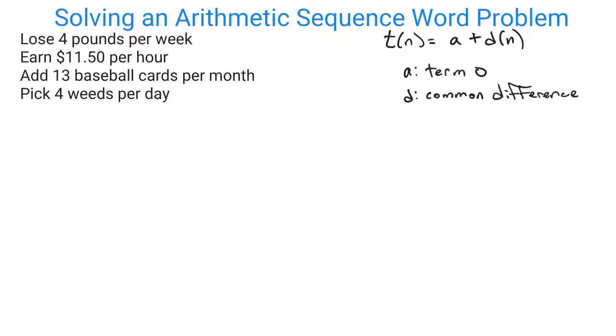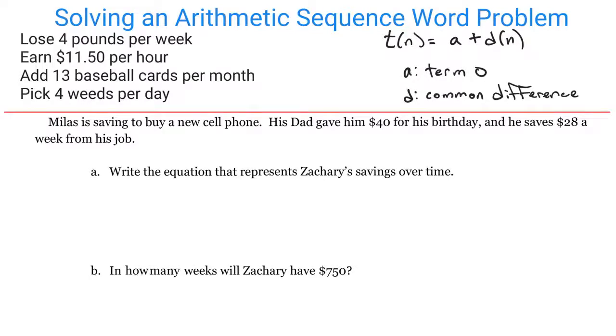Let's look at an example. Zachary is saving to buy a new cell phone. His dad gave him $40 for his birthday and he saves $28 a week from his job. Write the equation that represents Zachary's savings over time. In how many weeks will Zachary have saved $750?